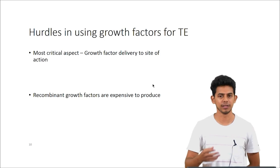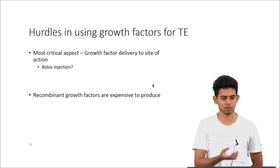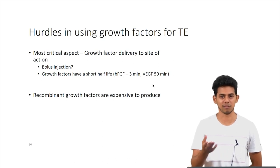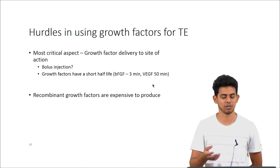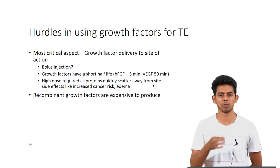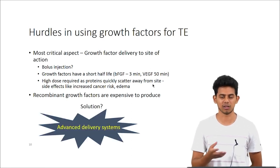The most critical aspect in using growth factors in tissue engineering is delivery to the right site. We could inject these growth factors as a bolus injection, but the problem is their half-life is very short — bFGF has just 3 minutes and VEGF has just 50 minutes. We would have to inject a large dose for any considerable amount to act on the tissue, and this high dose ends up leading to side effects like edema or an increased risk of cancer. Growth factors are also quite expensive to produce, so the solution is to use advanced drug delivery systems.